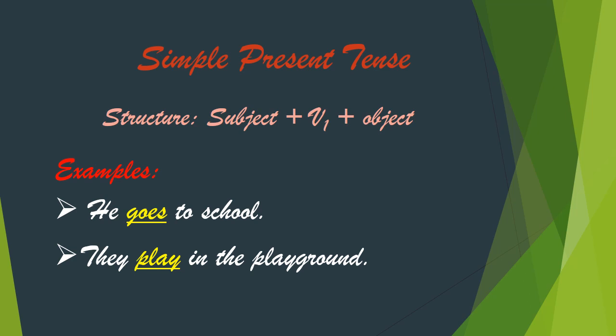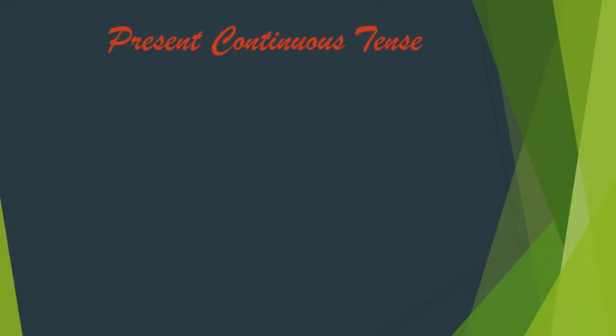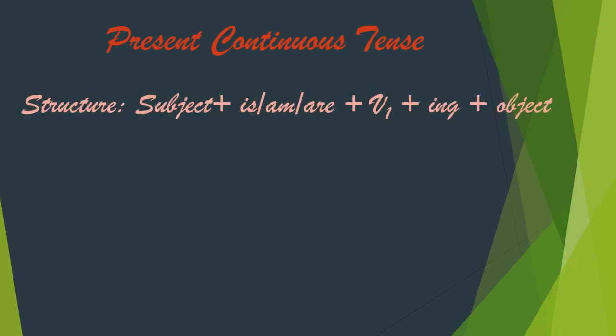In the first example, 'he' is a singular subject so the main verb 'go' is written with ES. In the second example, 'they' is a plural subject and the main verb doesn't require any modification.